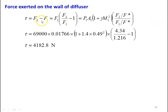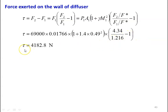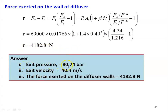The force exerted on the wall of the diffuser: tau equal to F2 minus F1, which is F1 into (F2/F1 minus 1). F1 is the impulse function at the inlet, P1 A1 into (1 plus gamma M1 square). Dividing by F* both numerator and denominator: F2/F* divided by F1/F* minus 1. Substituting: tau equal to 69000 into 0.01766 into (1 plus 1.4 into 0.49 square) into (4.34 divided by 1.216 minus 1), giving tau equal to 4182.8 Newton. The answers: exit pressure 80.34 kilo Pascal, exit velocity 40.4 meters per second, force exerted on diffuser wall equal to 4182.8 Newton.